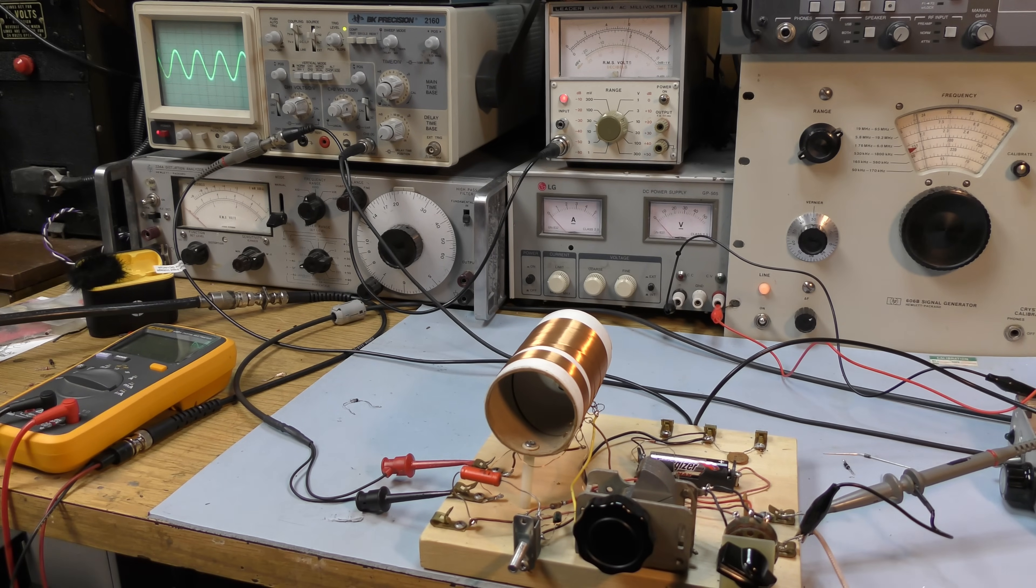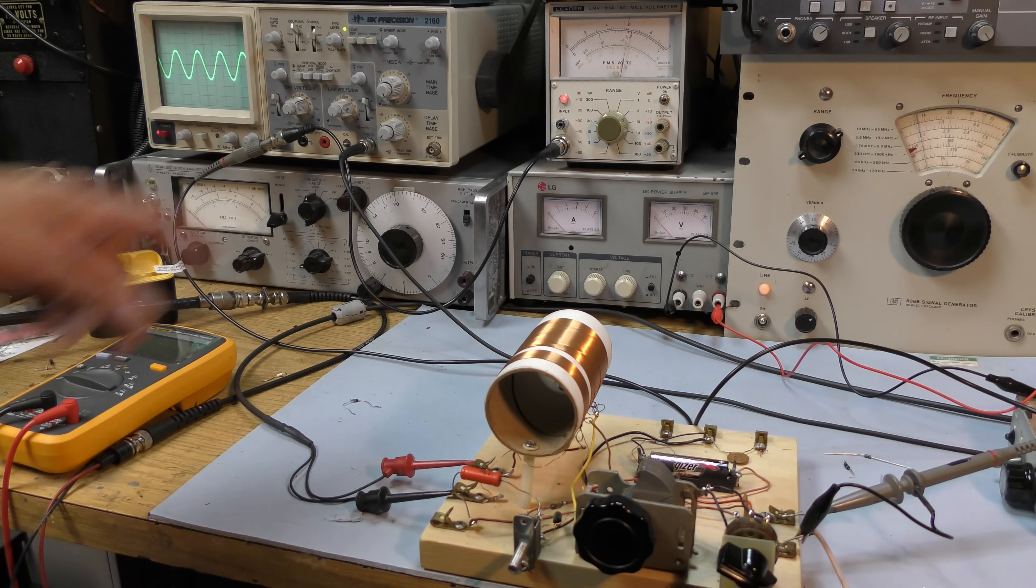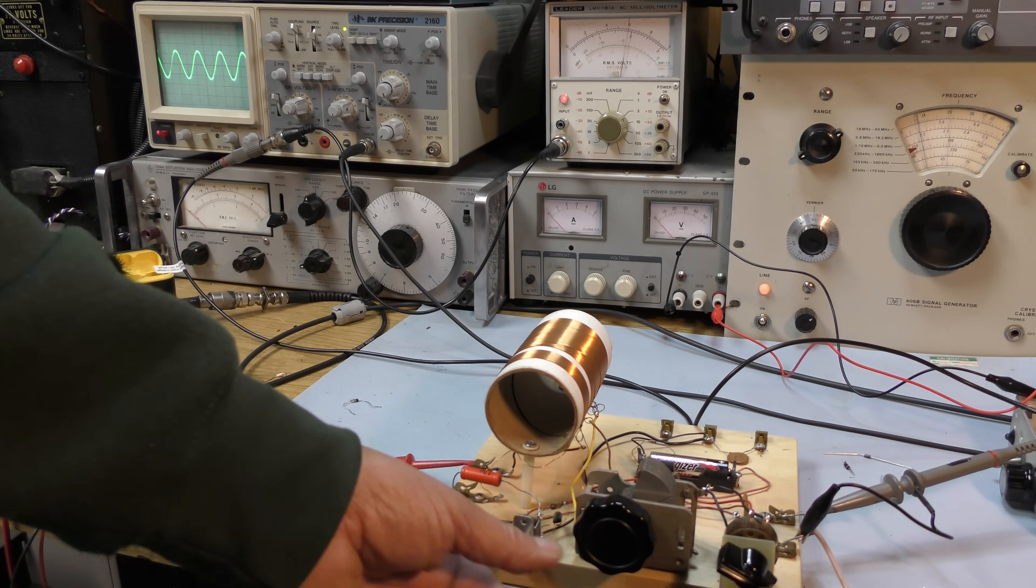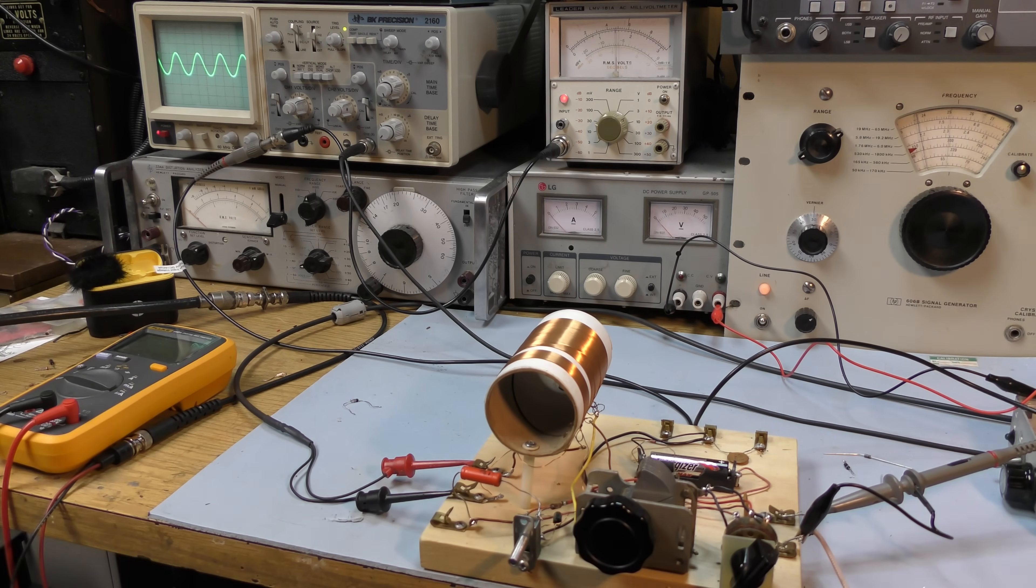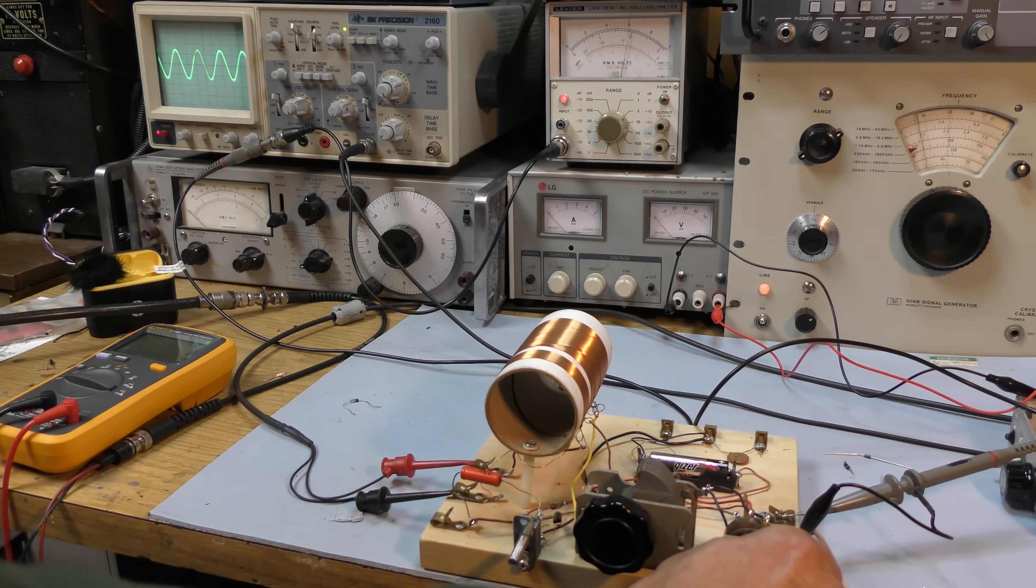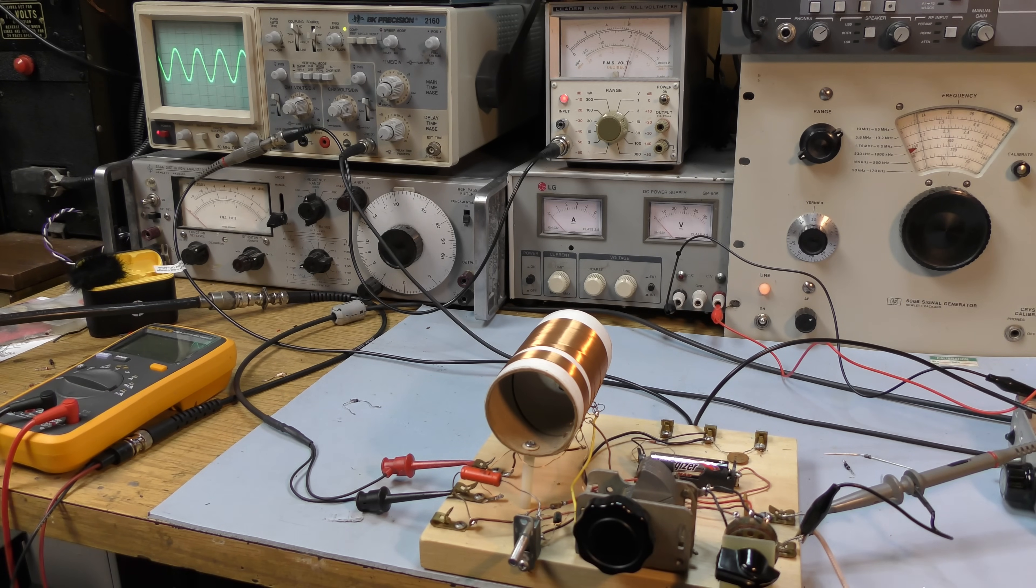Here's a Schottky diode. This is a Schottky signal diode, the BAT85, showing good sensitivity, excellent sensitivity, zero bias. This is an excellent diode. I think we have a winner here. The Schottky diode with bias is actually beating the germanium diode for sensitivity.